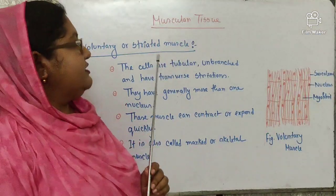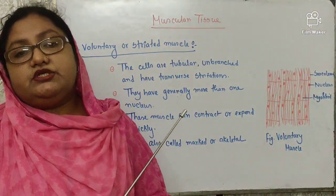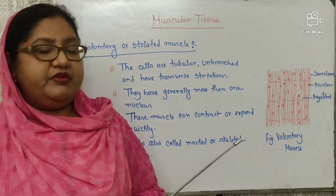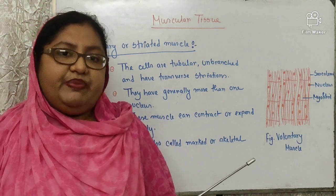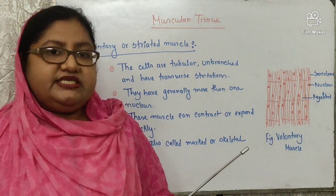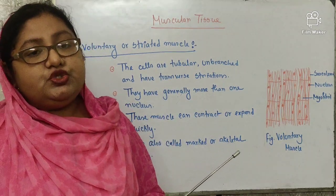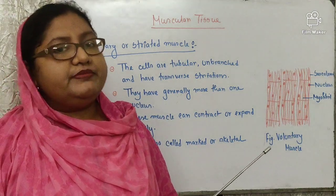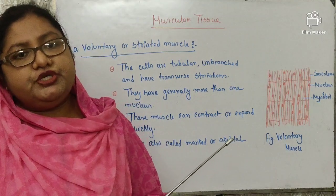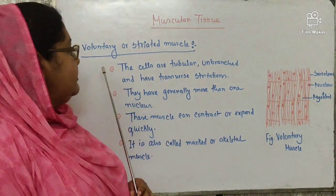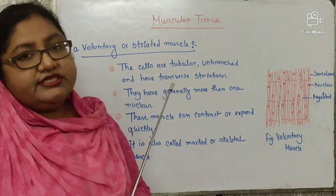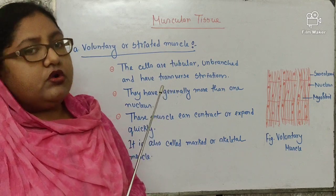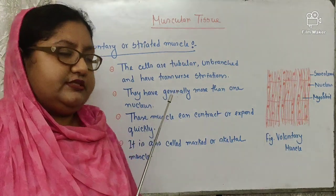Now, muscular tissue. What is muscular tissue? The special type of tissue which originates from the mesoderm of the embryo, is capable of contracting or expanding to affect movement, and forms the muscles of vertebrates, is called muscular tissue. Muscular tissue is of three types: voluntary muscle, involuntary muscle, and cardiac muscle.